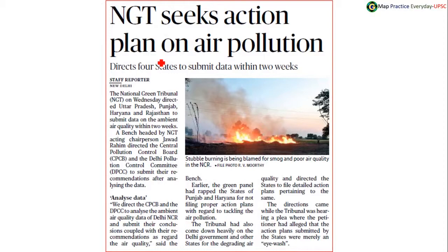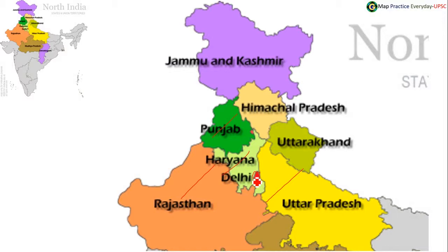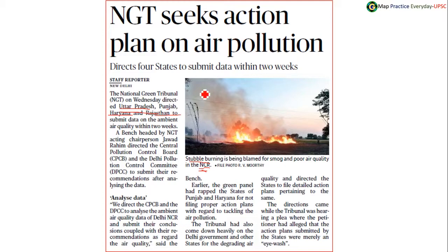The NGT action plan on air pollution is very important. The National Capital Region gets smoked up because farmers in Uttar Pradesh, Punjab, Haryana, and Rajasthan burn stubble in their farm fields. During winter, Punjab and Haryana wind direction pushes smoke into Delhi. During other seasons, Rajasthan and Uttar Pradesh contribute to air pollution in the National Capital Region. So the National Green Tribunal is seeking an action plan on air pollution in these four states.